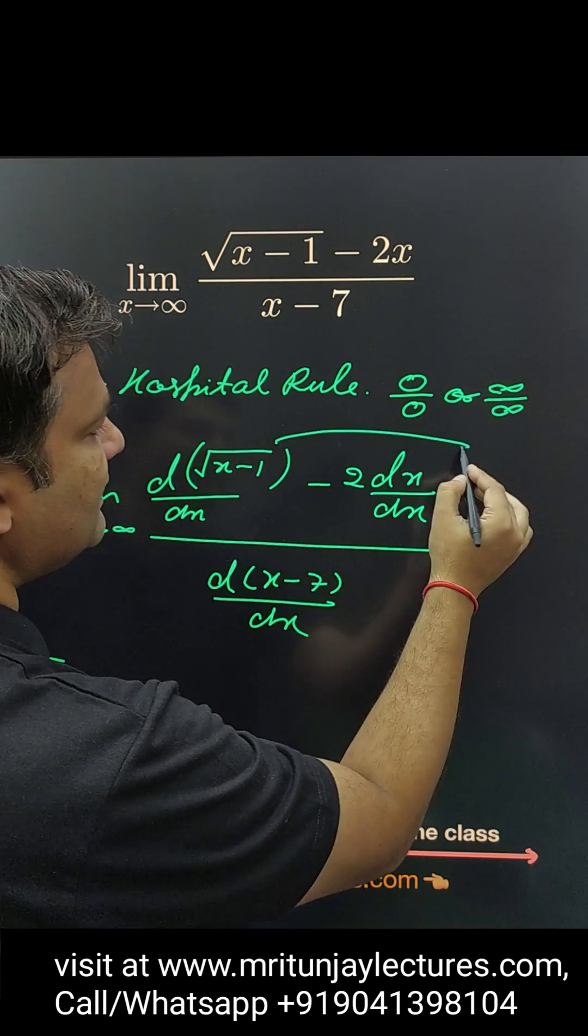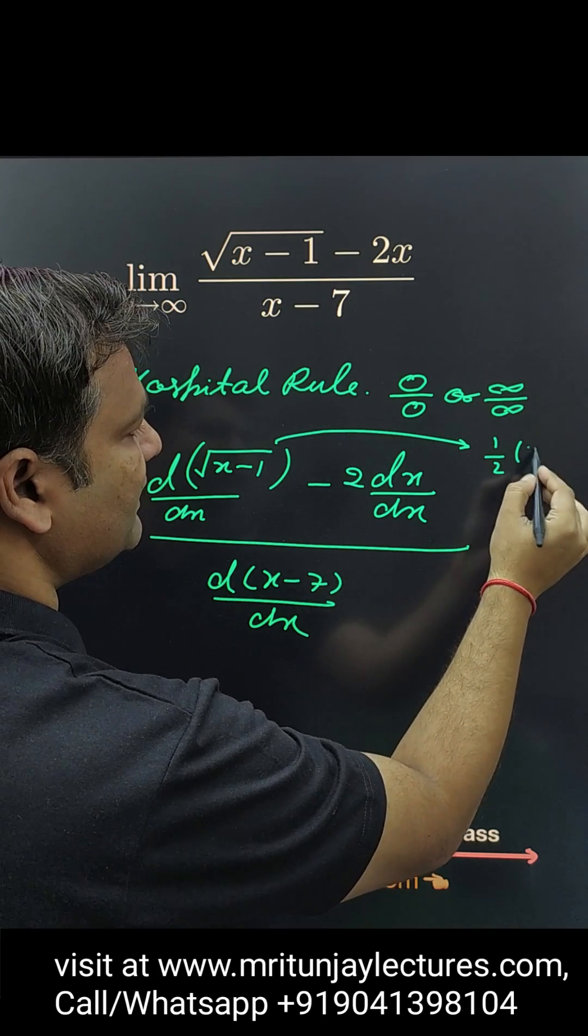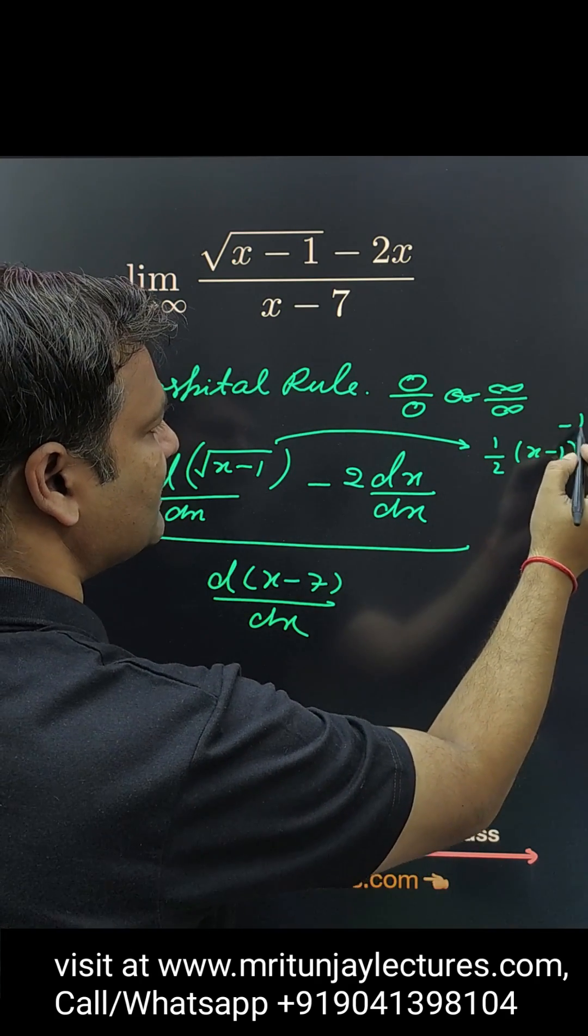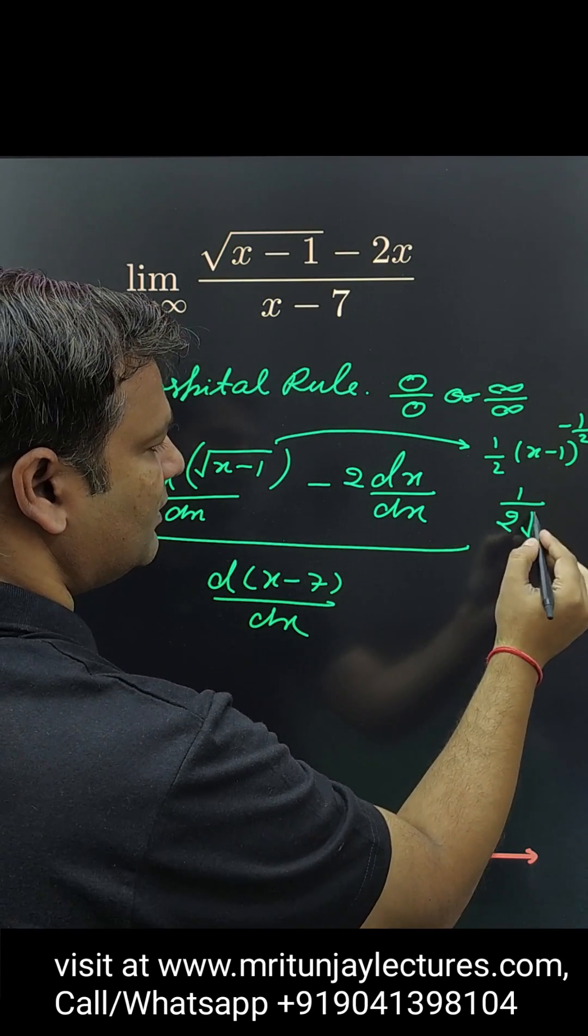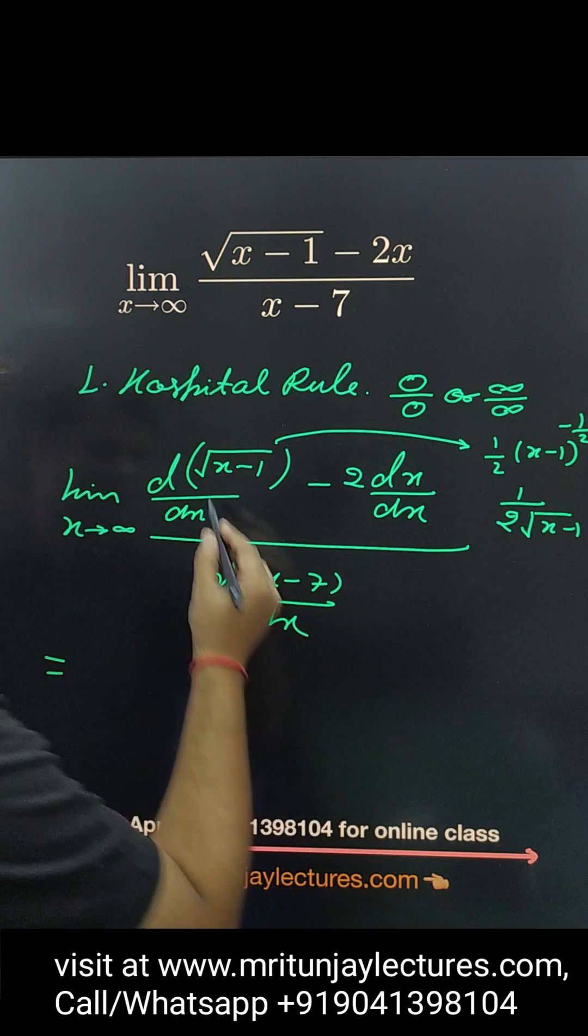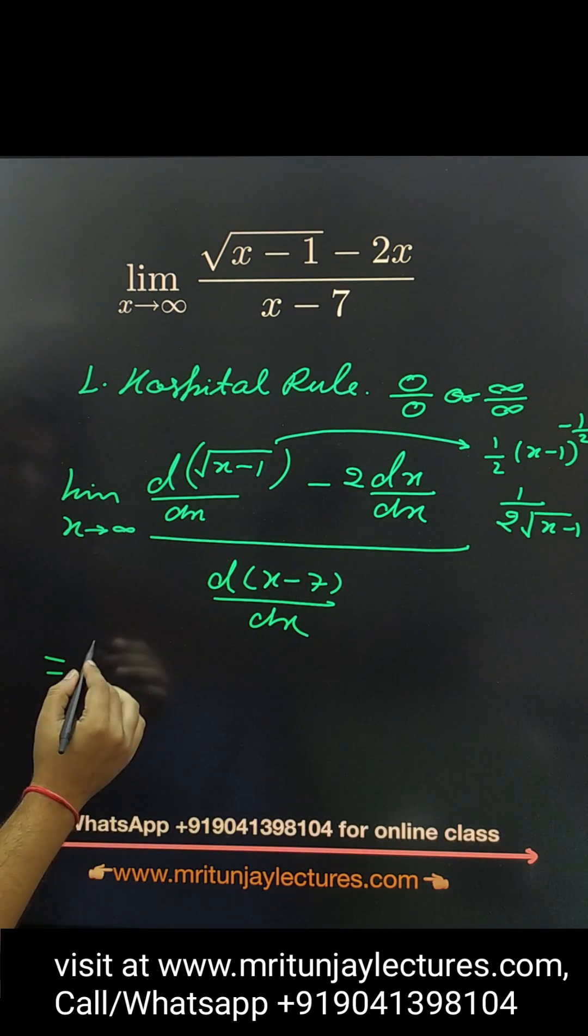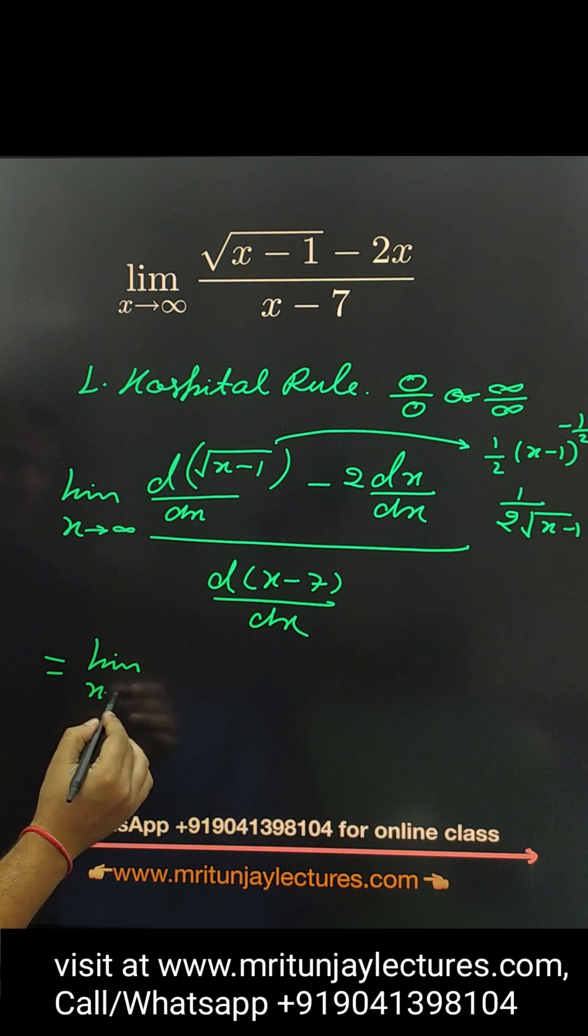That one basically here 1 by 2 x minus 1 to the power minus half into 1. So, basically 1 by 2 into under root x minus 1. That value put here, then we got limit x tends to infinity.